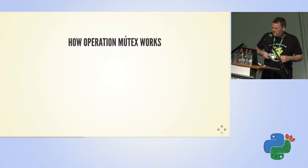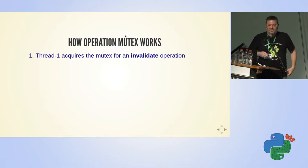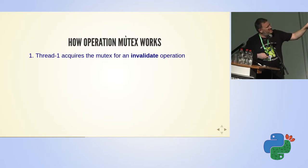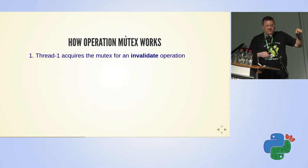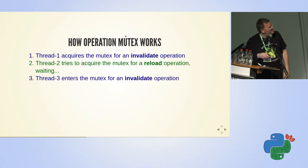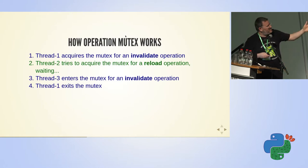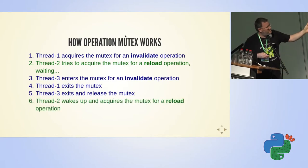So how should such a lock work? Let's say one thread comes and acquires the mutex for the invalidate operation — invalidate will be blue in this talk. Now the operation mutex is locked for invalidate. Another thread that wants to reload the cache has to wait because the lock is locked. Another thread that wants to invalidate can enter — this is the concurrency part of this lock, that we can have many threads doing the same operation. When the first thread exits and the other thread exits, the lock is empty, so we release the mutex, and then the thread that wanted to reload can enter.